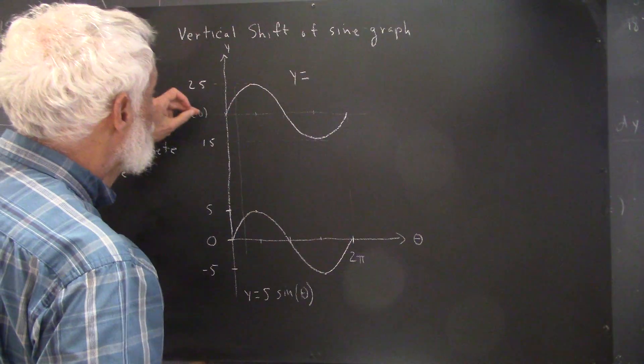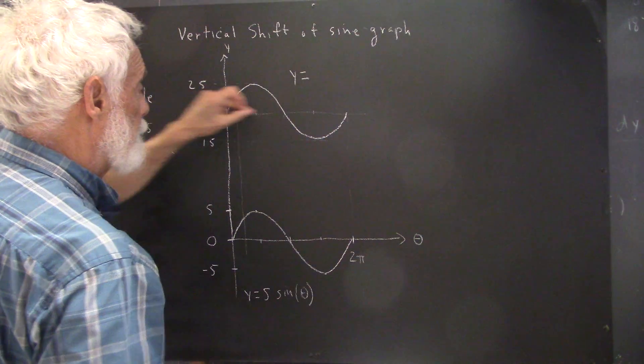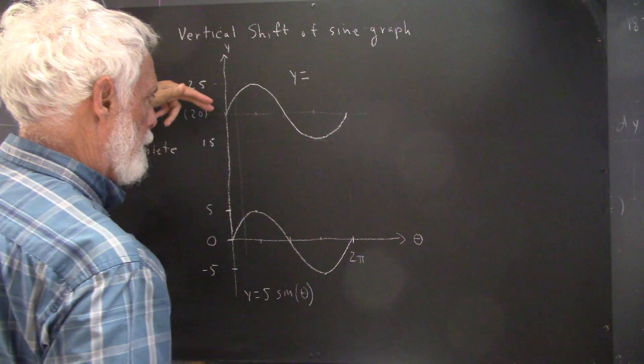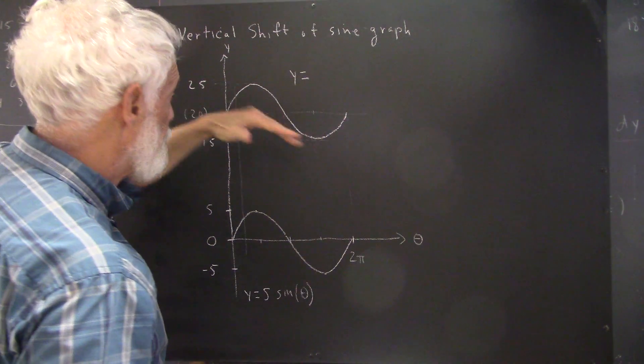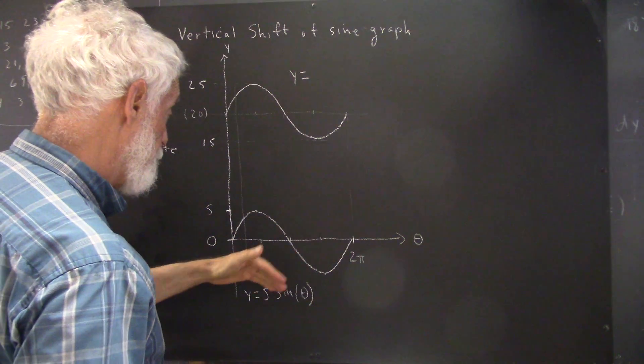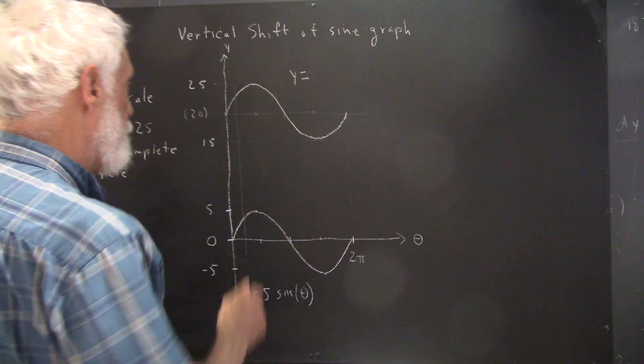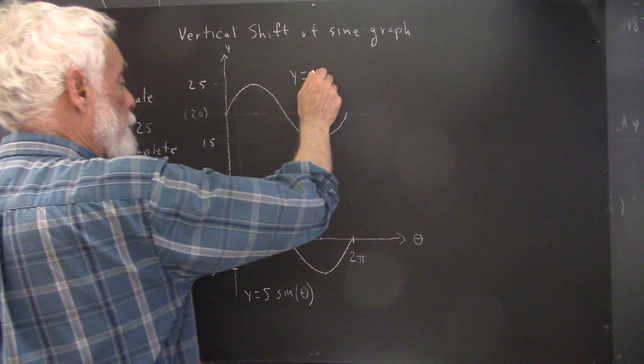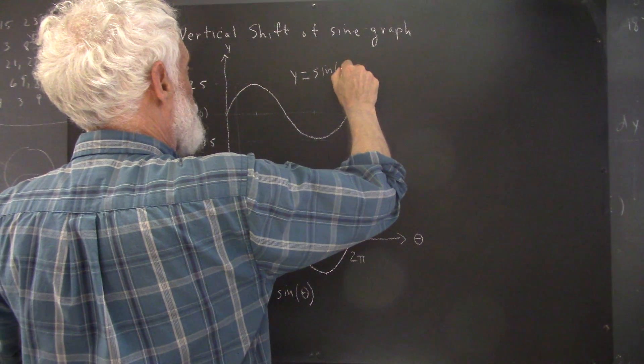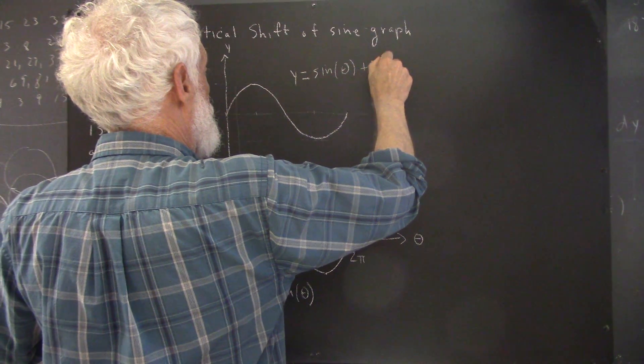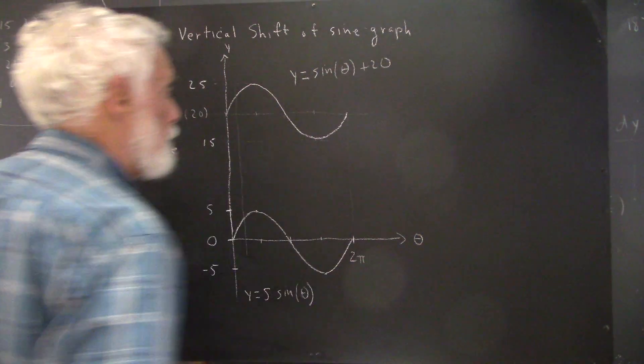this point up here would have to be 20 units above this point. Because, of course, our central horizontal axis for this sine function lies 20 units above this one. Everything else is the same. So this has to be, then, sine of theta plus 20.